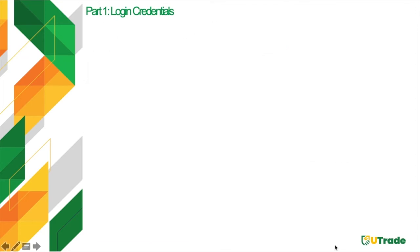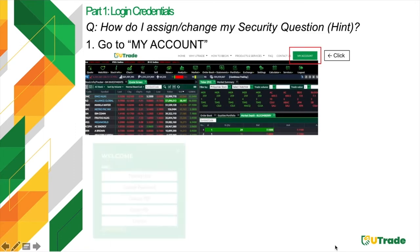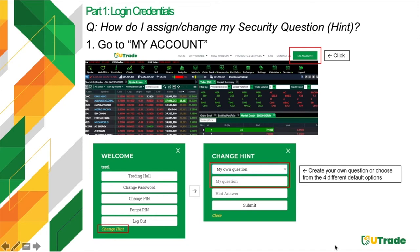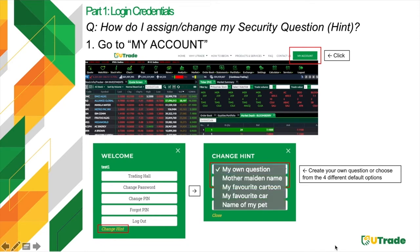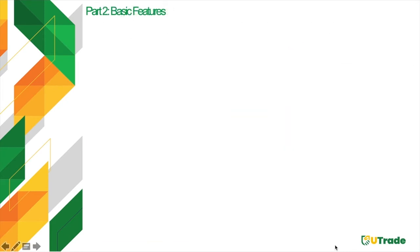Should you wish to reset your login credentials on your own, you will need at least an existing security question or hint. To assign or change your hint, go to My Account and click the Change Hint button. Create your own question or choose from 4 different default options. Type your answer and click Submit. If you have any questions regarding your login credentials, do not hesitate to email us at equities@unicapital-inc.com.